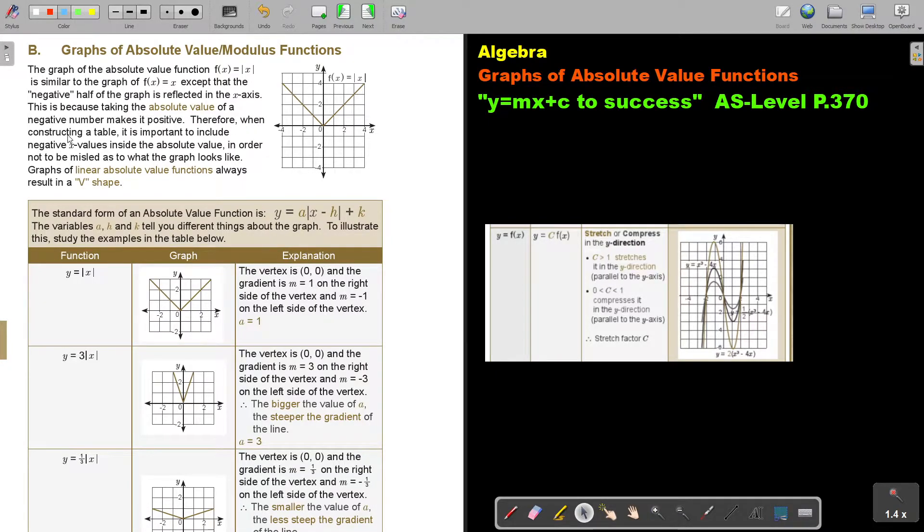Therefore, when constructing a table, it's important to include negative x-values inside the absolute value in order not to be misled as to what the graph looks like. Graphs of linear absolute value functions always result in a V-shape.